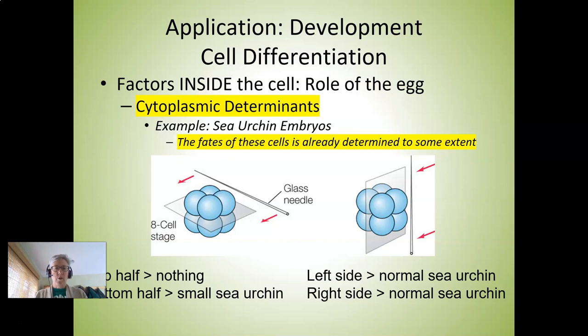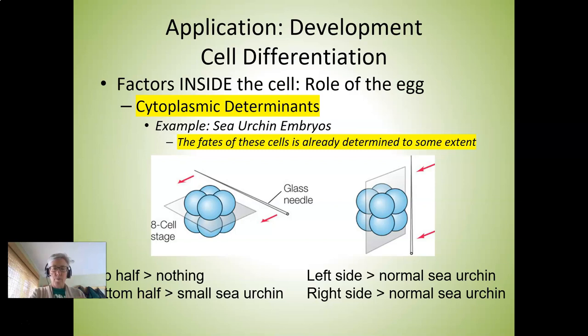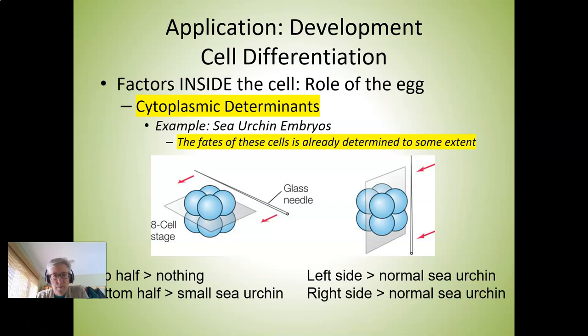Here's an example using sea urchin embryos at the eight-cell stage. If you take a needle and slice through the top layer, that top layer develops into nothing, but the bottom layer develops into a small sea urchin. However, if you slice it vertically, both the left and right sides will each develop into a normal sea urchin. The point is that there's some cytoplasmic determinant present in some cells but not all, causing differentiation. The cytoplasmic material from the mother is not evenly distributed in the zygote, and depending on which determinants each cell receives, different things will develop.